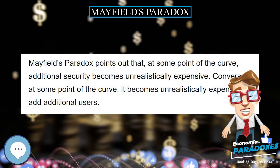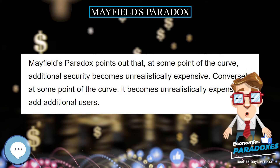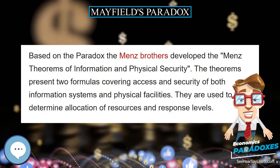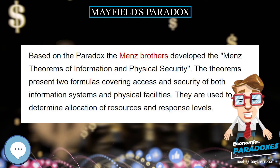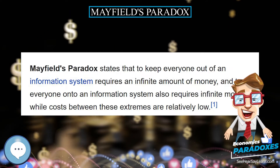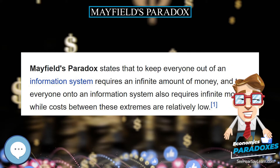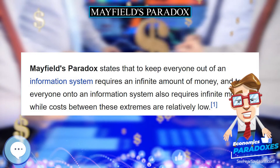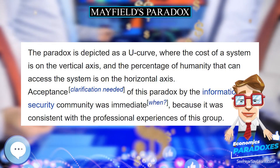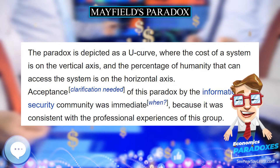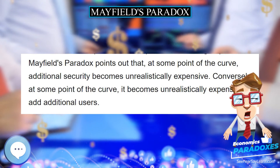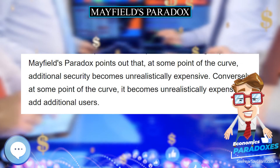Acceptance of this paradox by the information security community was immediate, because it was consistent with the professional experiences of this group. Mayfield's Paradox points out that at some point of the curve, additional security becomes unrealistically expensive. Conversely, at some point of the curve, it becomes unrealistically expensive to add additional users.